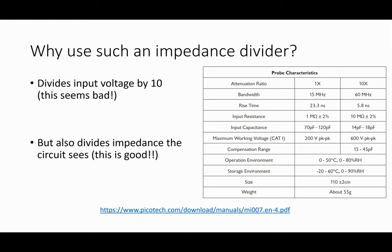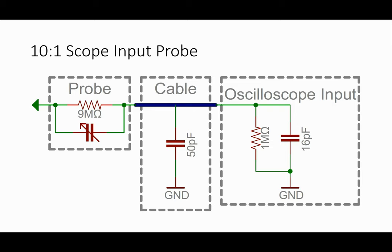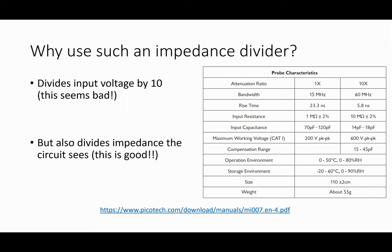It also specifies the input resistance, which is exactly divided by 10. Because if you look at the circuit, we now have 9 megaohms in series with 1 megaohm, so the input resistance is also divided. I've only been talking about capacitance — there's actually a real resistive impedance as well, so it's even worse than I showed.